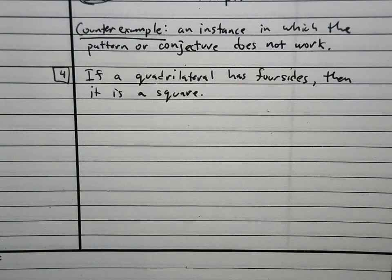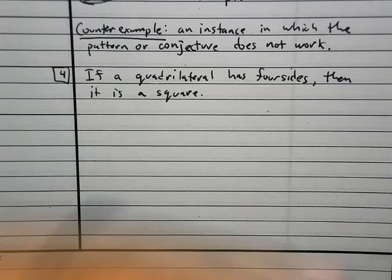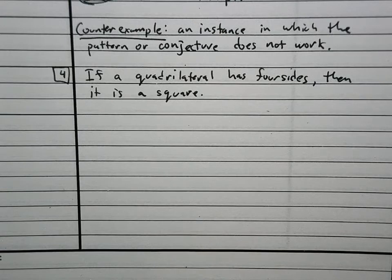We have to provide a counterexample for this statement. If a quadrilateral has 4 sides, then it is a square. What could it be if it has 4 sides? Give me an example where it has 4 sides and it's not a square. A rectangle. Is that the only counterexample you can come up with? A rhombus. It could be a rhombus. What else could it be? A kite. Parallelogram. A trapezoid. It could be any of those shapes. Do I have to provide all 5 of those? No.